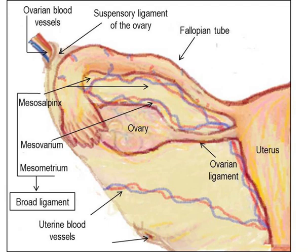Anatomy class is now in session. This is a diagram of a fallopian tube. The fallopian tubes, also known as uterine tubes, oviducts, or salpinges (singular salpinx), are paired tubes in the human female that stretch from the uterus to the ovaries.